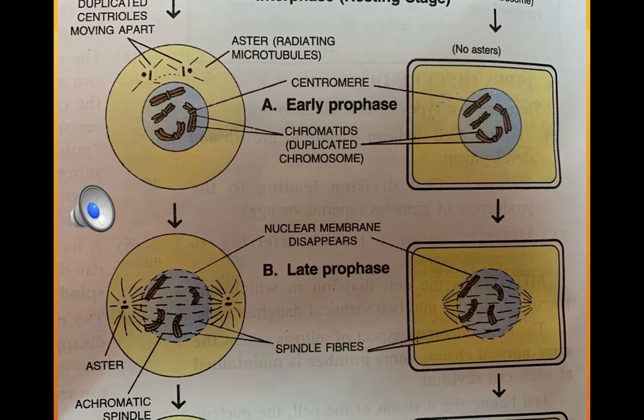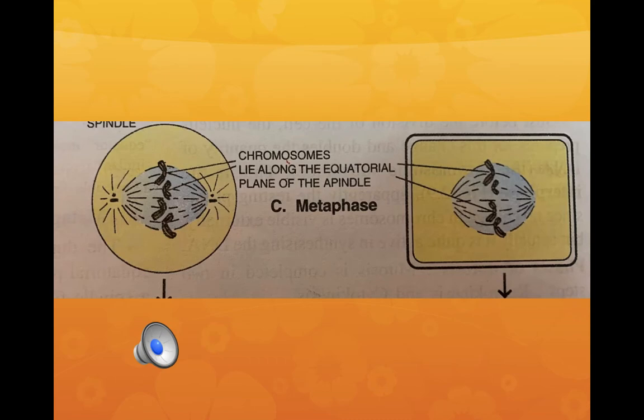In late prophase, spindle fibers have started appearing between the daughter centrioles, forming the achromatic spindle, and the nuclear membrane and nucleolus have disappeared. In metaphase, each chromosome gets attached to the spindle by its centromere, and the chromosomes line up in one plane at the equator — this is the characteristic feature of metaphase.